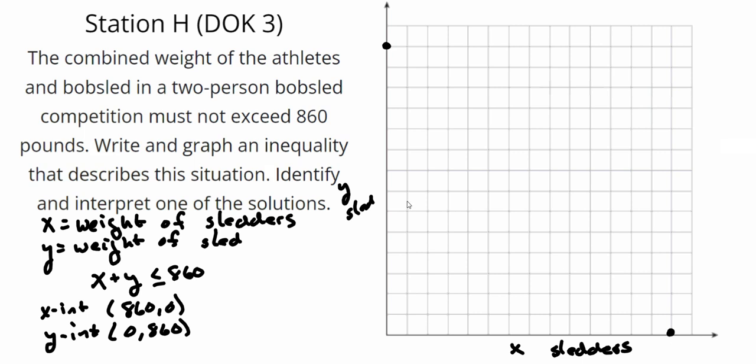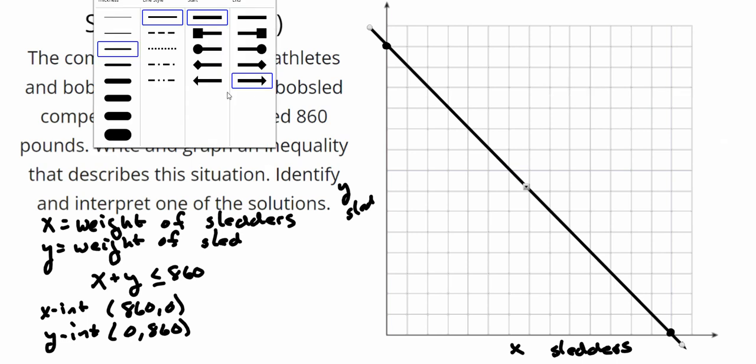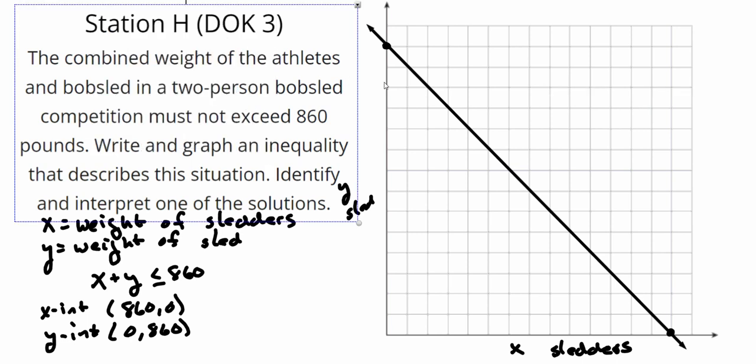These two points are both equally distant from the origin. And I'm going to use a line, because I have no faith that I'm going to draw a straight line. And I know it's going to be a solid line, because it's less than or equal to, meaning anything on that line could be a solution.